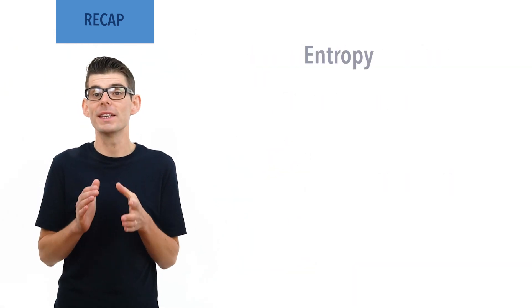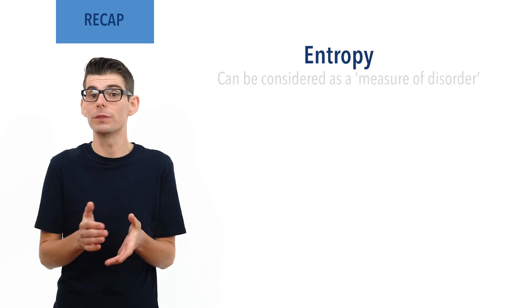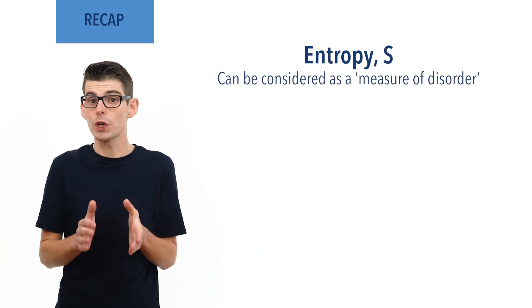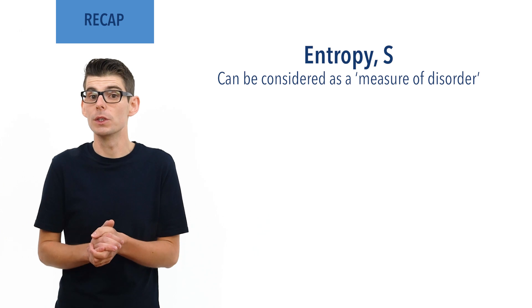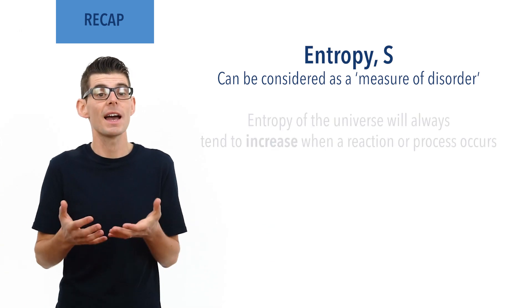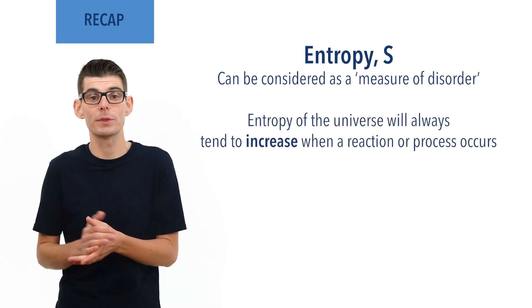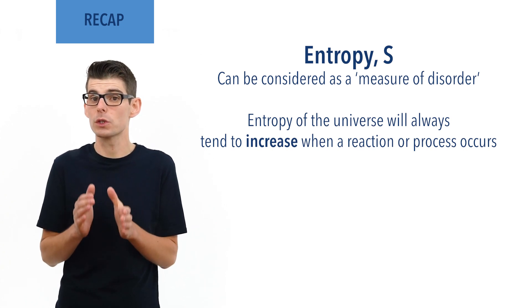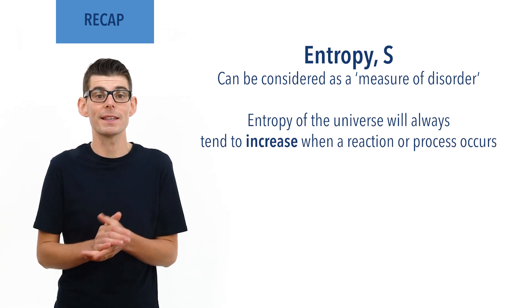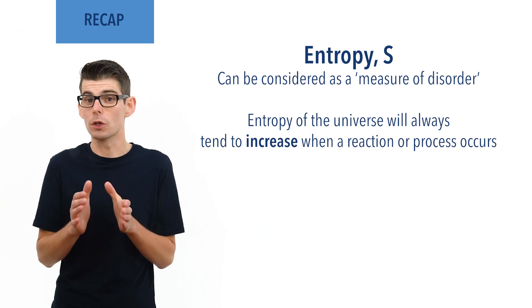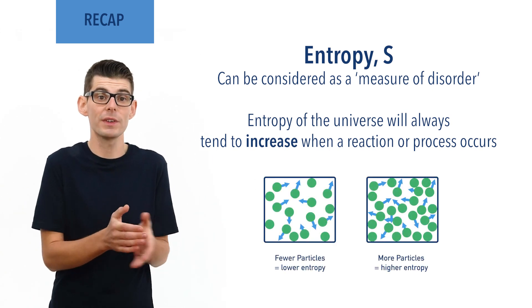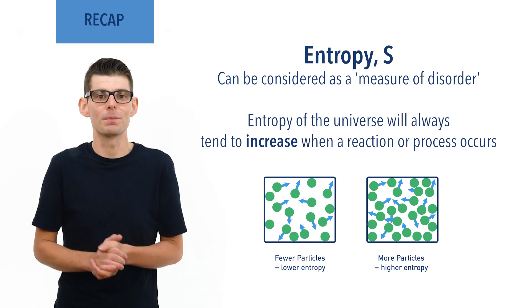As a simple definition, entropy is described as being a measure of disorder and is represented with a capital S. The total entropy of the universe will always increase as a result of a reaction or process. The greater the potential disorder of a system, the greater its entropy. This means the greater the number of free particles or species within a system, the higher its entropy.